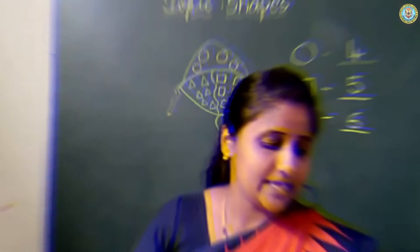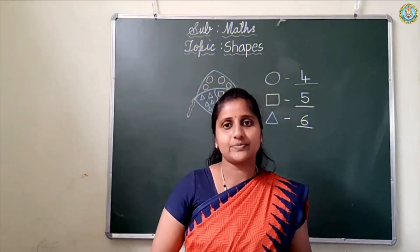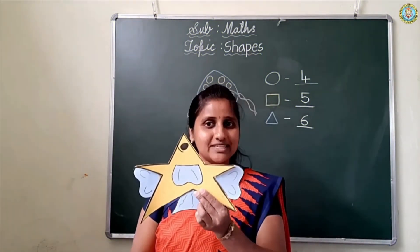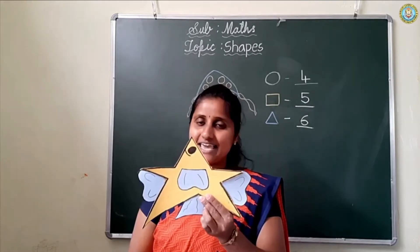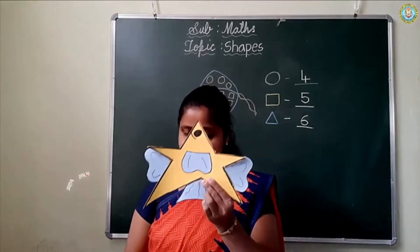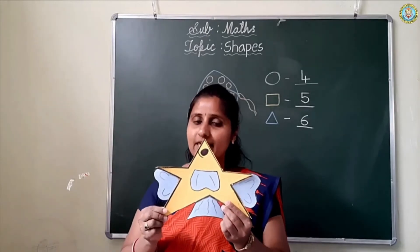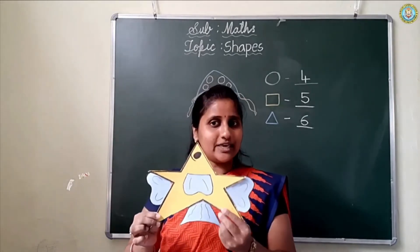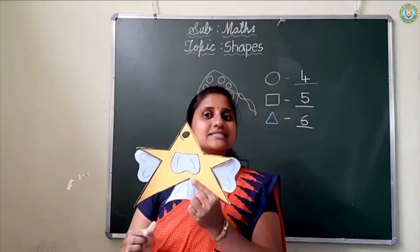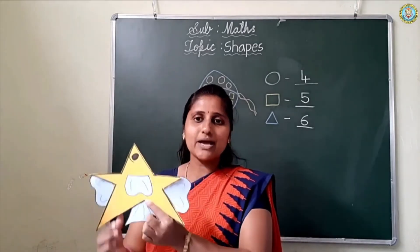Now comes our next shape. Which shape is this, children? This is a star. Star is a unique shape. Okay, see children — which shape is this? Star. Got it? Say bye-bye star.